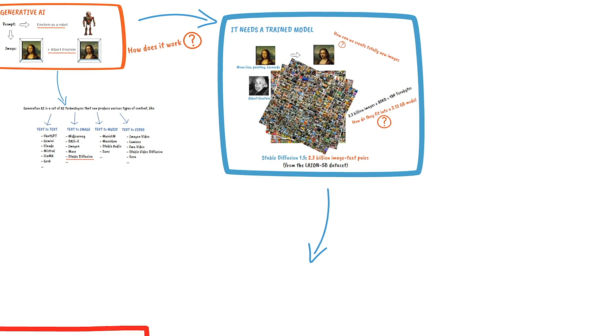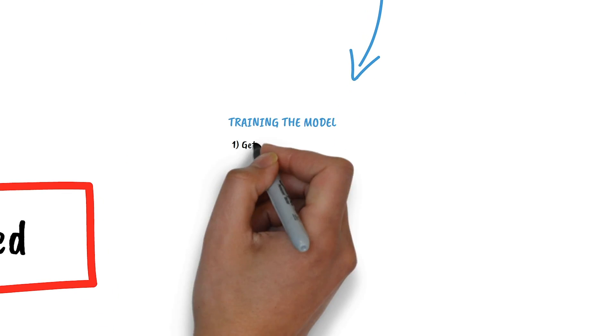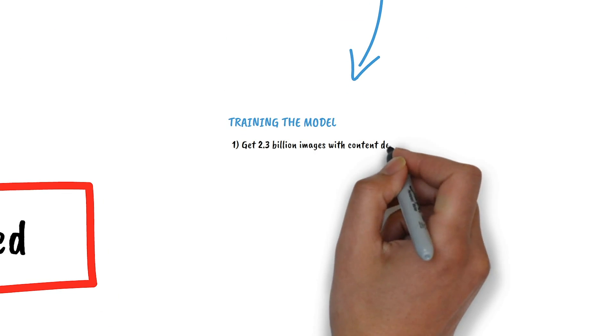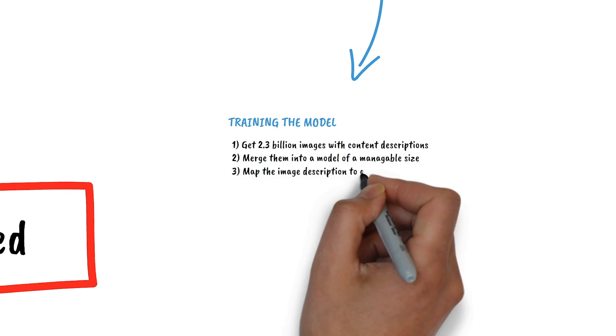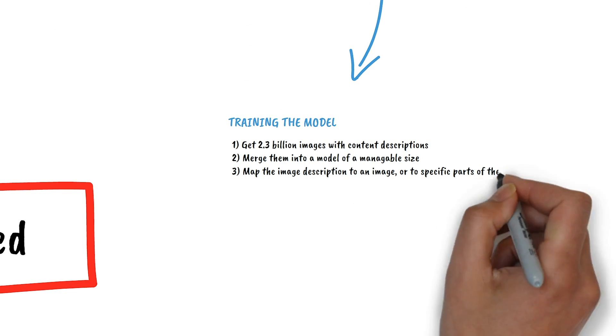So what does it take to train a model? We need to get 2.3 billion image text pairs. We need to merge them in a model that's not too big. We need to map the image description to the image, or to parts of it.